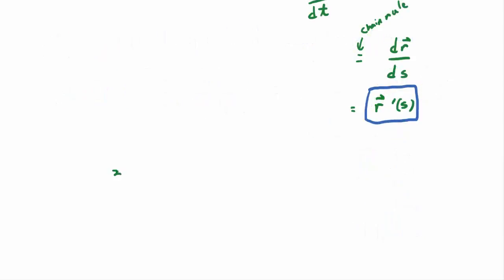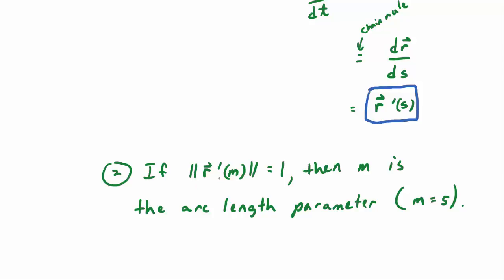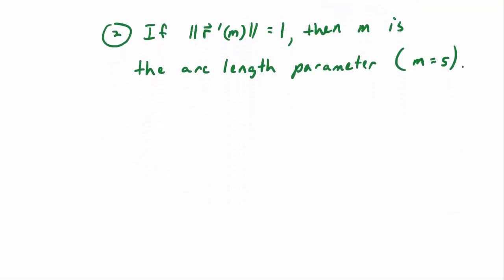Note two: if the magnitude of R prime of M for some parameter M turns out to be one, then M is the arc length parameter — M equals S. There's only one way to parameterize R so that the magnitude of R prime equals one, and that's by using the arc length parameter. Now we're ready for the big definition of the day: curvature.